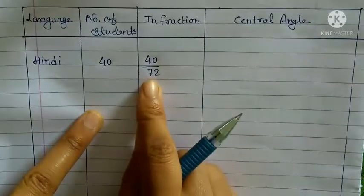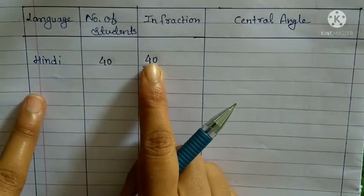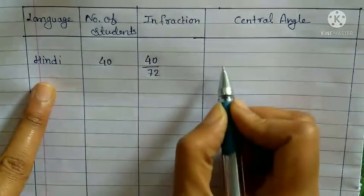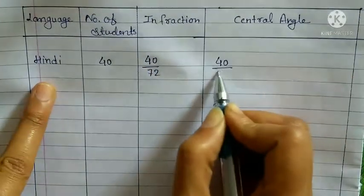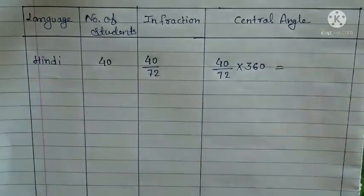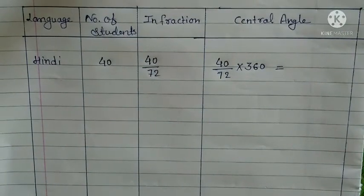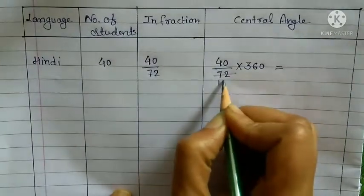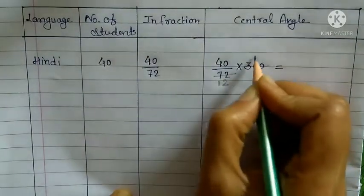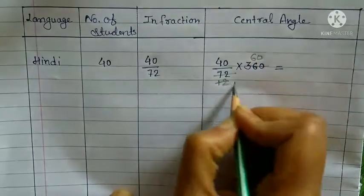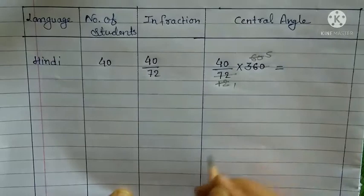Total students are 72. To simplify 40/72, we divide: 6×1=6, 6×2=12, 6×6=36, 6×0=0. Again: 12×1=12, 12×5=60.